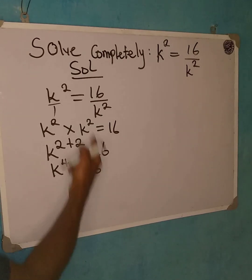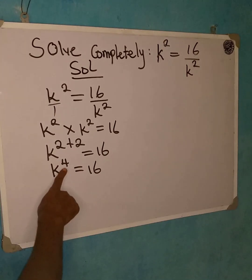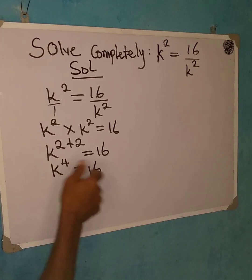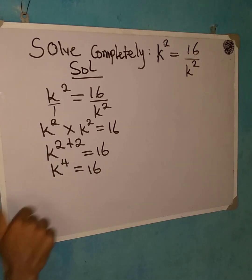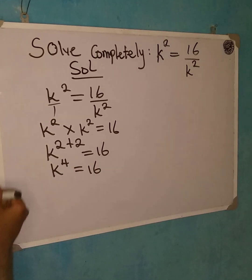And then from here, remember the question says we should solve it completely. That means we should have all the roots. And do not forget, if you have a fourth root like this, if you have a cubic equation like this, you're going to have four roots or four answers to the problem. So we must have four solutions to this.